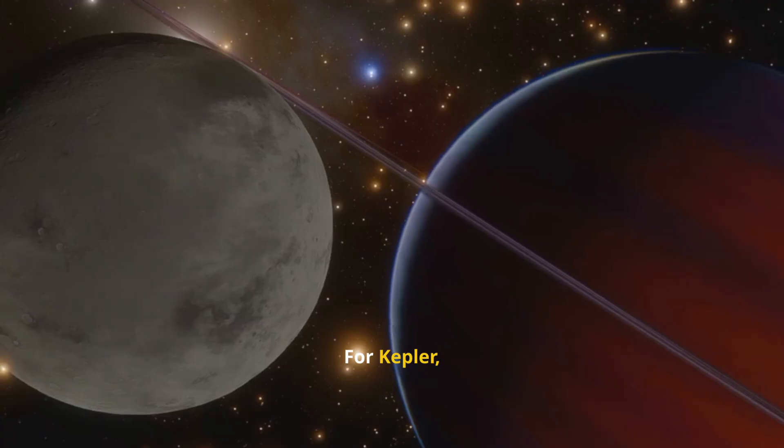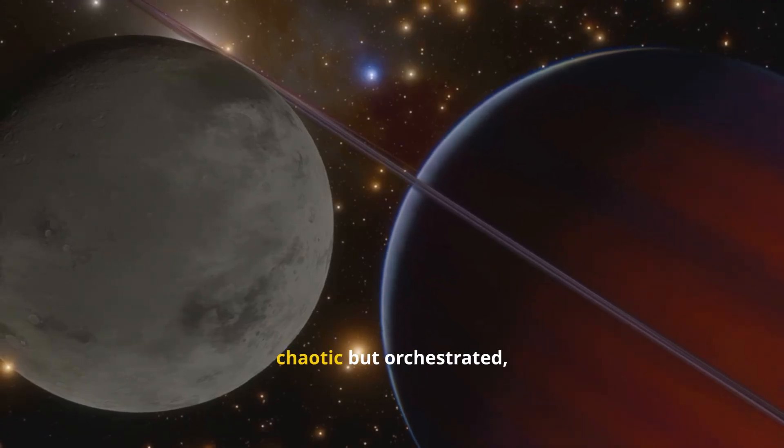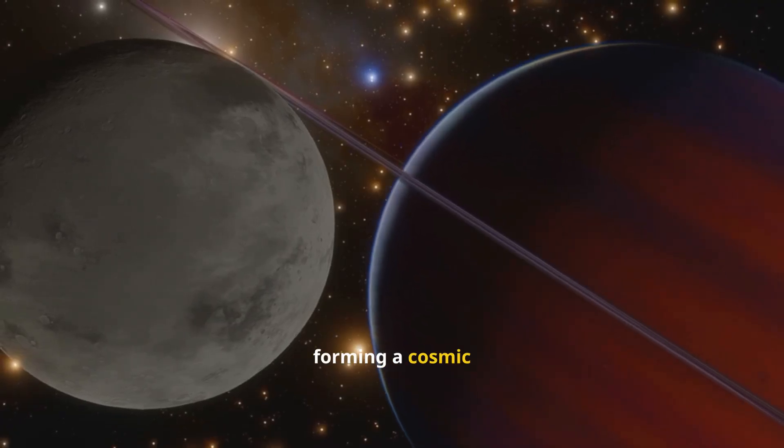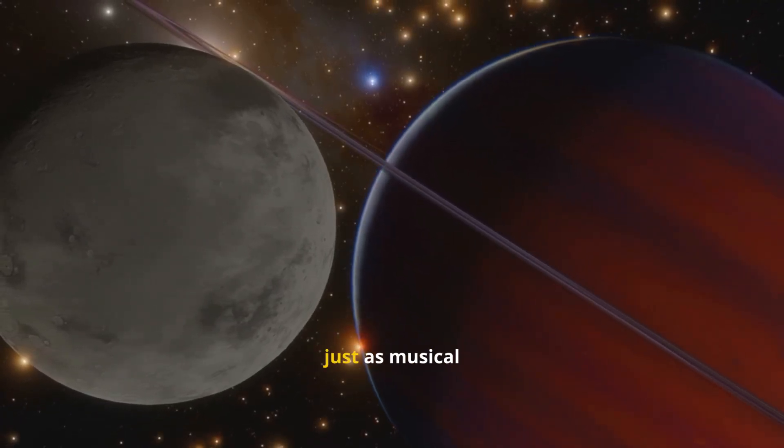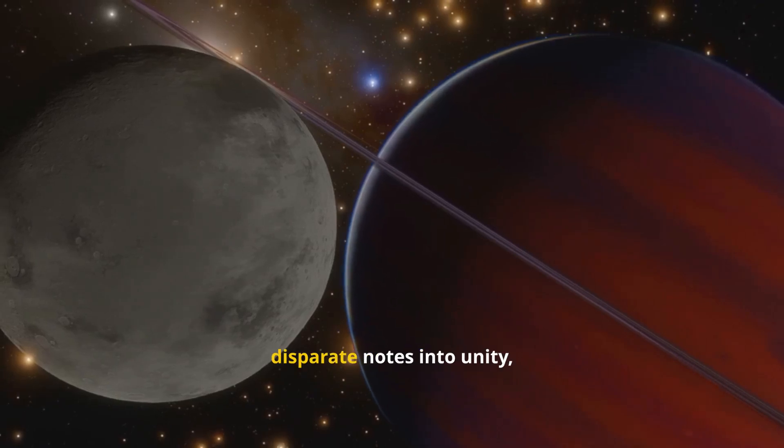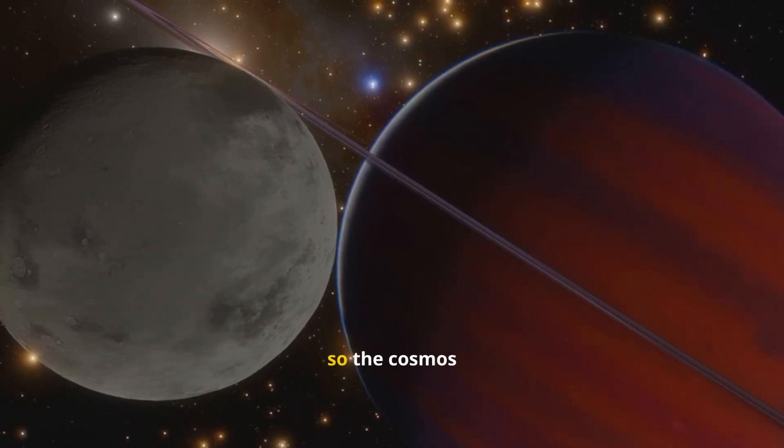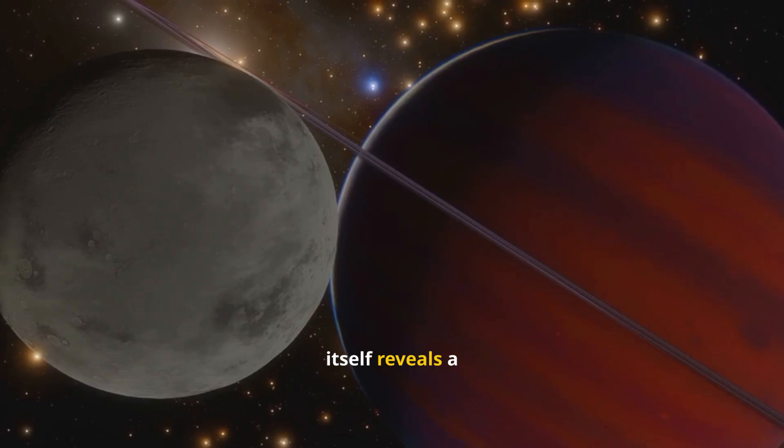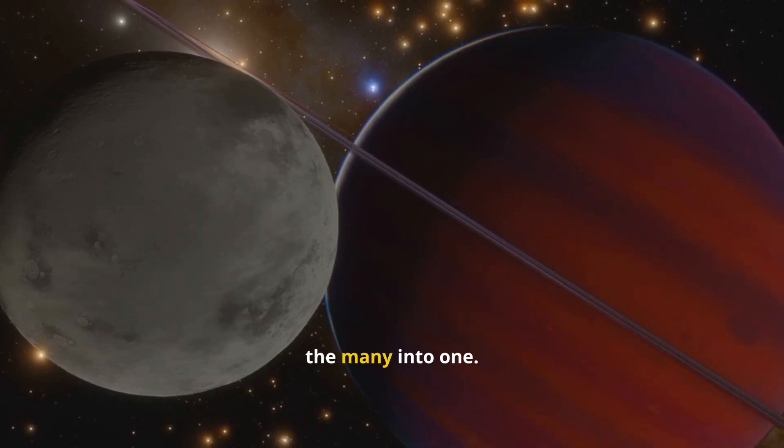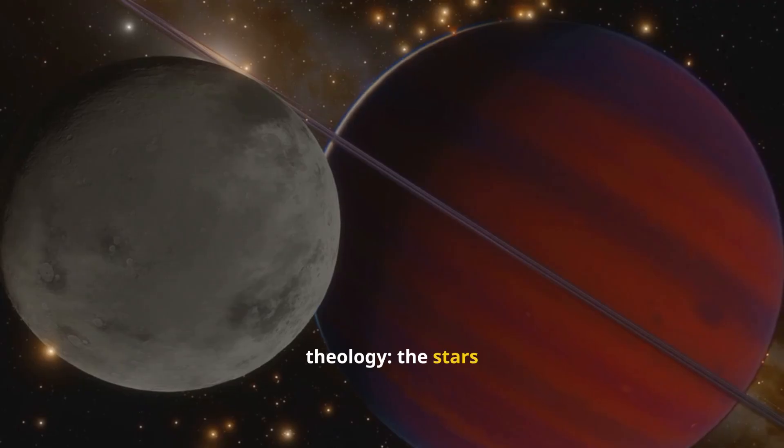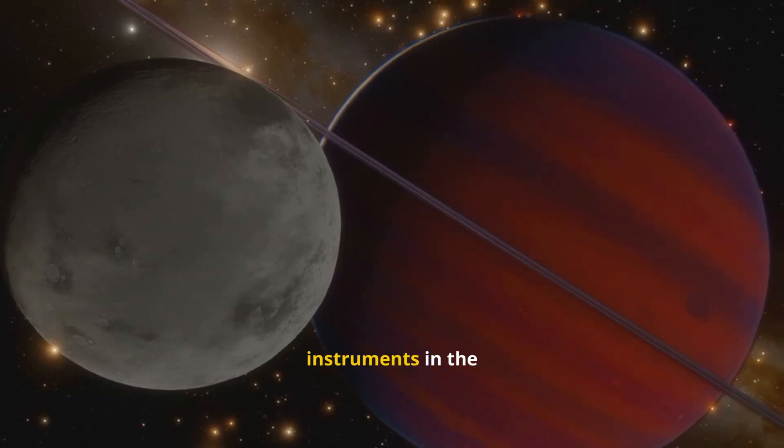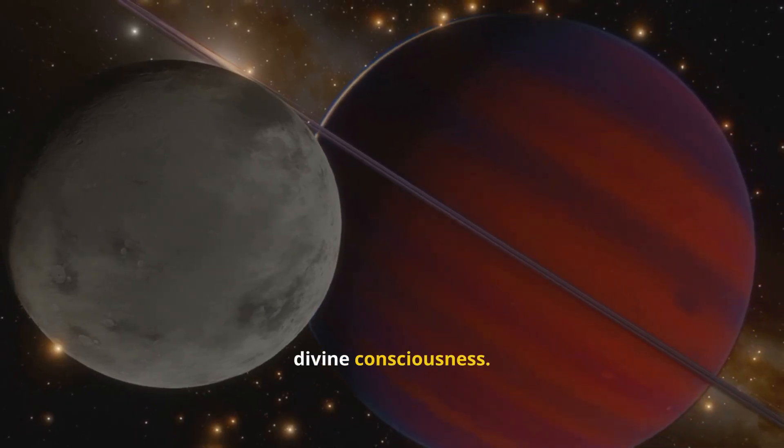For Kepler, the movements of the planets were not chaotic, but orchestrated, forming a cosmic symphony reflecting God's mind. He believed that just as musical harmony brings disparate notes into unity, so the cosmos itself reveals a hidden order, binding the many into one. In this way, astronomy became theology. The stars and planets were instruments in the eternal song of divine consciousness.